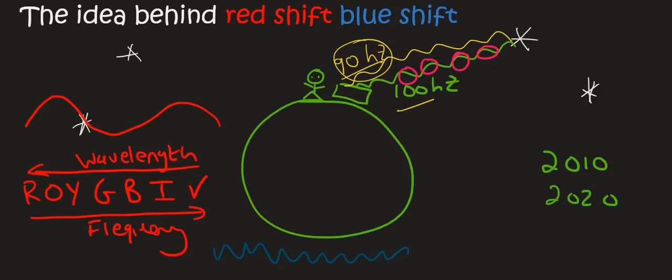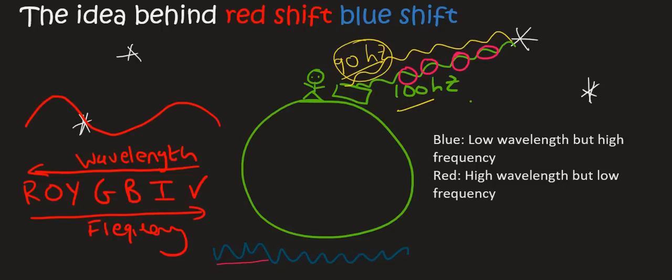So red has a low frequency, but a very high wavelength. Blue has a very high frequency, but a very low wavelength. And so they have summarized that blue has a low wavelength, but a high frequency. Red has a high wavelength, but a low frequency. And so what are we starting to observe here with these instruments?